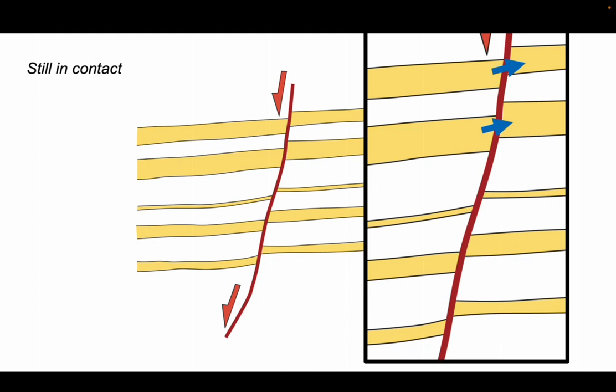Here we have sands that are still in contact. Here we have a sand that's only marginally in contact. And here we have no contact at all between the sands that are offset and juxtaposed against the intervening potentially impermeable formations. So lateral fluid migration through these successions will be strongly influenced by the juxtapositions along the fault.